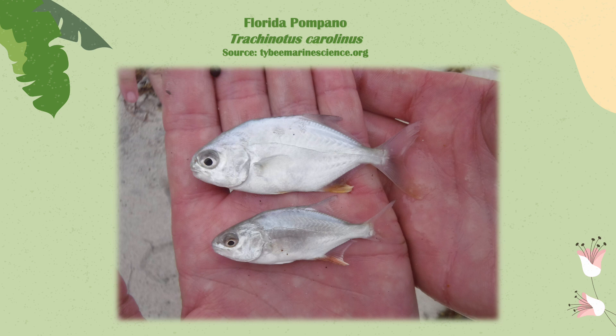These are some Florida pompano fish, Trachinotus carolinus. The one at the top is an adult and the one beneath it is a juvenile. These fish are toothless and they can grow up to a length of 18 inches.